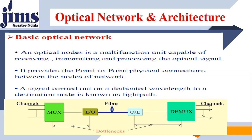The signal carried on a dedicated wavelength to a destination node is known as a Light Path. This is an Optical Data Communication Network. It starts with channels of different wavelengths, which are multiplexed. You have an electrical-to-optical device called a source, and a physical link which is the Optical Fiber. At the receiving side, we have optical-to-electrical conversion — those are the detectors. And this is the demultiplexer which separates all the wavelengths and frequencies into different channels.